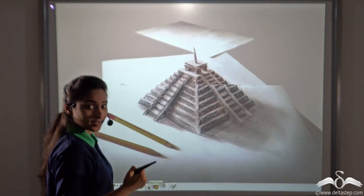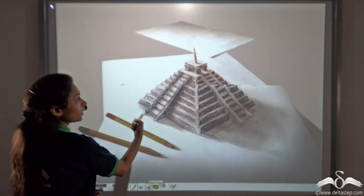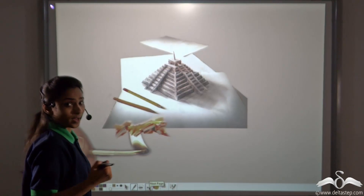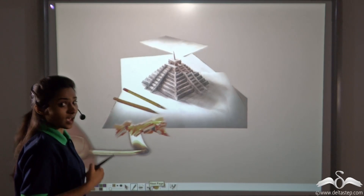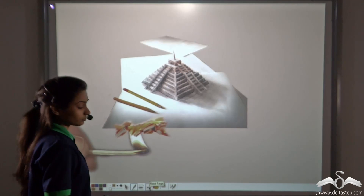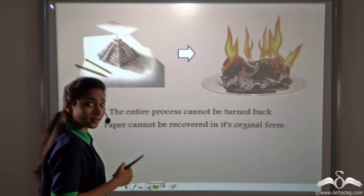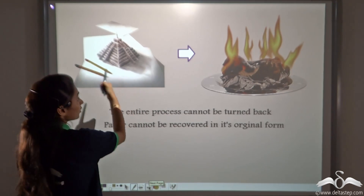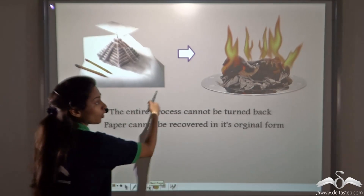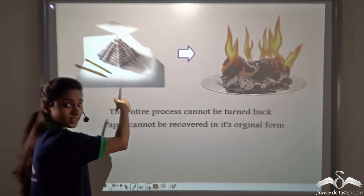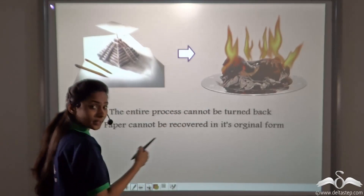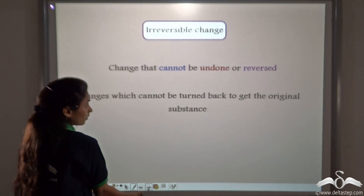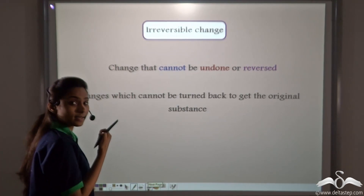After erasing and getting back the plain paper, she made another drawing on those papers. Now while she was away, her brother got a mischievous idea — he burned this paper. Seeing this, Rhea cried a lot. But can her brother bring back the paper again? Can he bring back her drawing again? No, because it is already burnt. He cannot reverse the process here, so this entire process cannot be turned back. Paper cannot be recovered in its original form here.